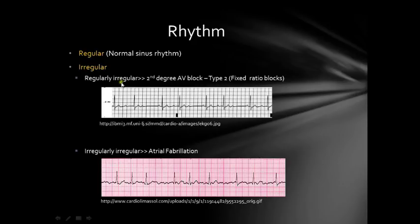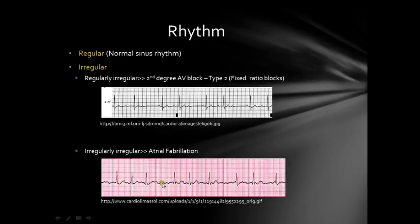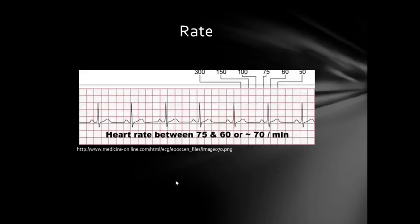One type is regularly irregular, which is commonly seen in second degree AV block type 2 — it's abnormal but abnormal in a regular pattern, so you get a pattern. This is called second degree AV block. The other type is irregularly irregular, seen typically in atrial fibrillation — completely chaotic and no organization at all. You get no identifiable P waves because the atria are fibrillating.